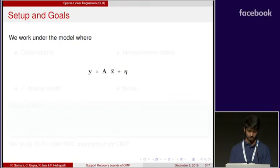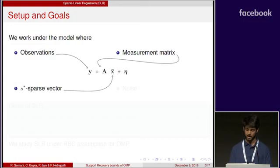We work under the model where the observation vector y is equal to the product of the measurement matrix A and an s star sparse vector x bar, along with some added noise eta. We just require some deterministic conditions on eta to hold, and in general sub-Gaussian noise also satisfies those conditions.